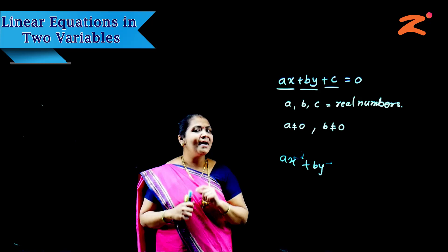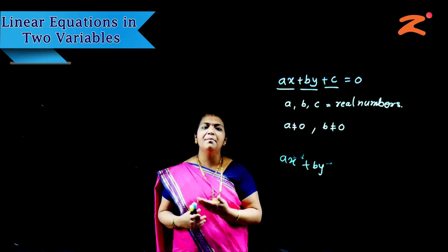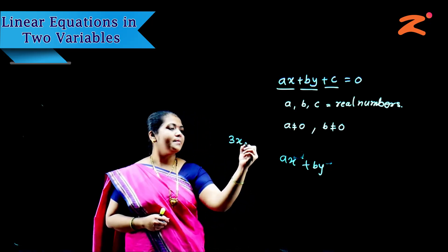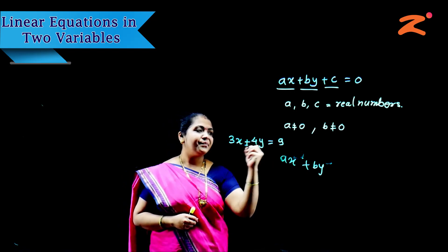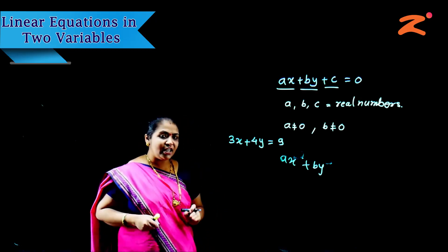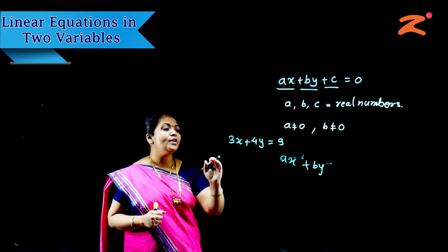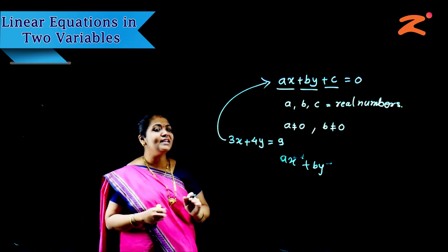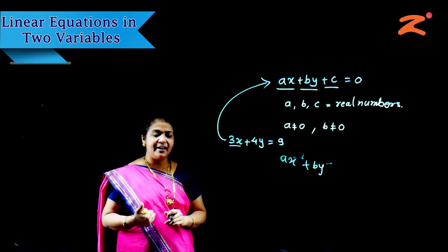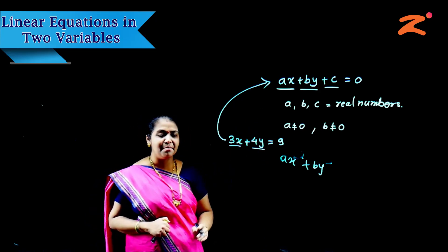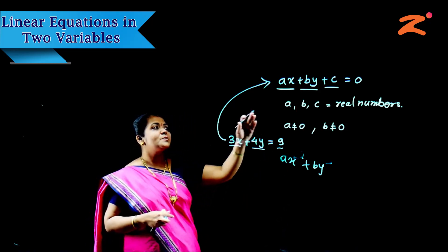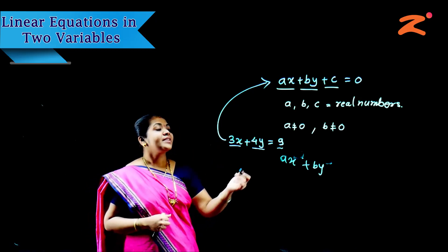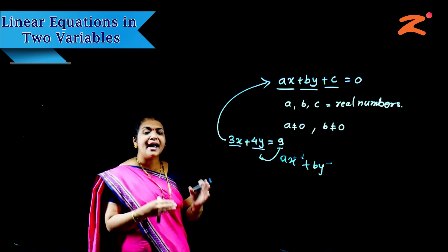Now we will see an example that can appear in your board exam question paper. If the expression 3X plus 4Y equals 9 is given, and you are told to rearrange and write it in the standard form, the format should be AX plus BY plus C equals 0. The 9 is on the right side of the equal sign, so we shift it to the left — when you shift a term, its sign changes.